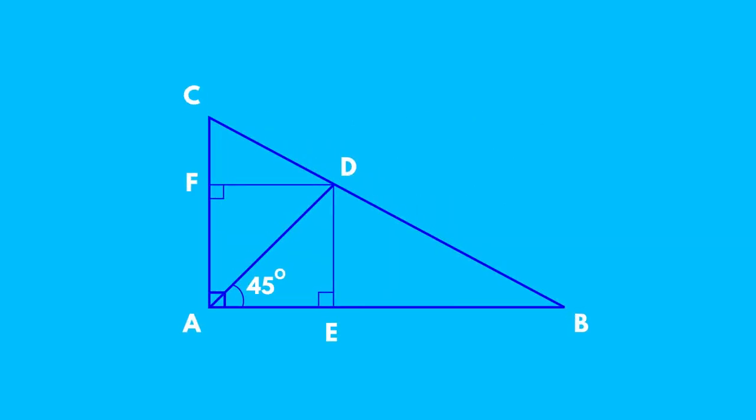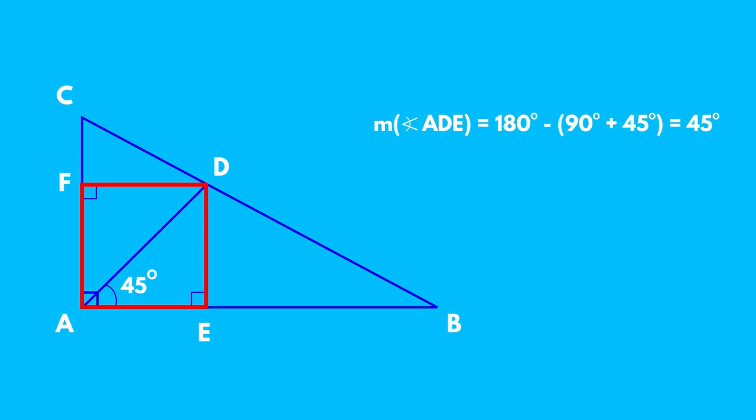And now for the last challenge: look at the picture and identify the square from this shape, giving two reasons. Solving: the quadrilateral AEDF has three right angles — A, E, and F — therefore the fourth angle is also right, so we can say it is a rectangle. But we observe that diagonal AD forms with side AE an angle of 45 degrees, and since angle AED is right, having two congruent angles, triangle ADE is a right isosceles triangle, so it has two congruent sides. Therefore, the rectangle AEDF with two consecutive congruent sides is a square.